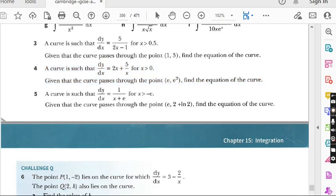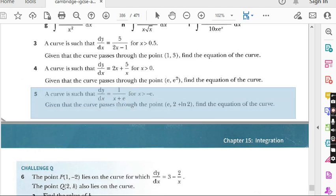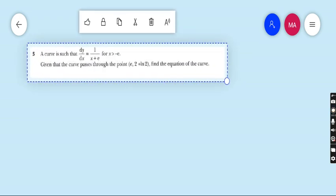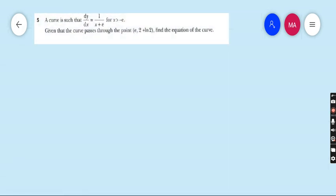Move to last question, question number 5. A curve is such that dy by dx is equals to 1 upon x plus e, for which x should be greater than minus e. Given that the curve passes through the point e, 2 plus ln 2, find the equation of the curve. Very easy question.